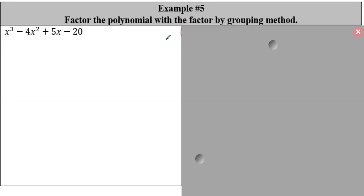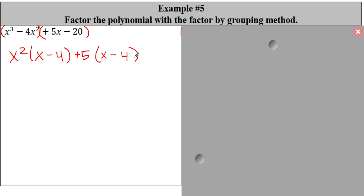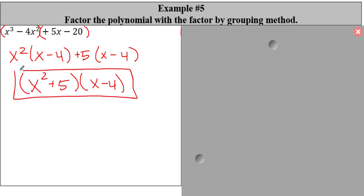Our last example — example number five — this says to factor the polynomial with the factor by grouping method. Here we're starting with four terms. This is actually a cubic polynomial and we can solve it by factor by grouping. We group the first two and the second two. Taking out x² from the first group, I'm left with (x² − 4). From 5x and −20, five can go in, so I take out a positive five and I'm left with (x − 4). So our answer is (x² + 5)(x − 4). We cannot fully factor x² + 5.